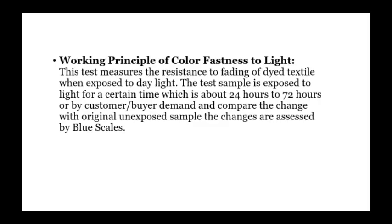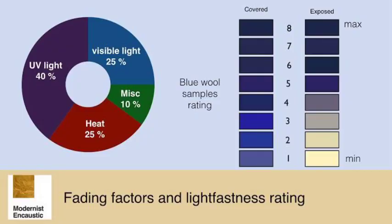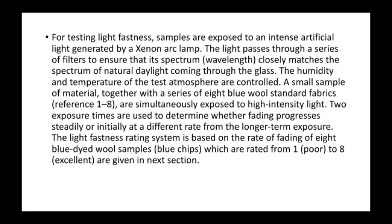Working principle of color fastness to light. This test measures the resistance to fading of dyed textiles when exposed to daylight. The test sample is exposed to light for a certain time, which is about 24 hours to 72 hours or as per customer and buyer demand, and the change is compared with the original unexposed sample. For testing light fastness, samples are exposed to an intense artificial light generated by a xenon arc lamp. The light passes through a series of filters to ensure that its spectrum and wavelength closely match the spectrum of natural daylight coming through glass.